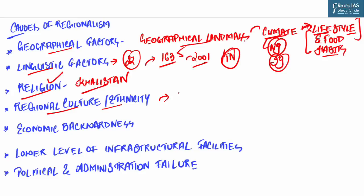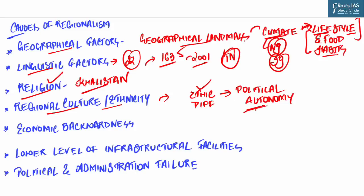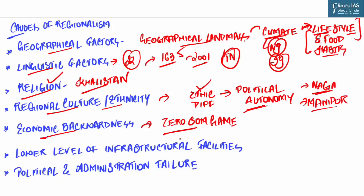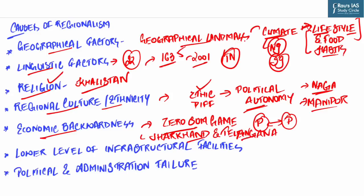Next cause is regional culture or ethnicity. India is home to as many as 645 scheduled tribes as recognized by the Constitution. These ethnic differences form the base for demands for political autonomy — for example, the Nagas of Nagaland demanding a nation based on their ethnic identity, which can also be connected to the violent protests in Manipur. The next cause is economic backwardness, which is one of the major triggering causes of regionalism. It is a zero-sum deal — one region's prosperity is proportional to another region's poverty — fueling regional sentiment. For example, the formation of states like Jharkhand and Telangana were based on lack of development.